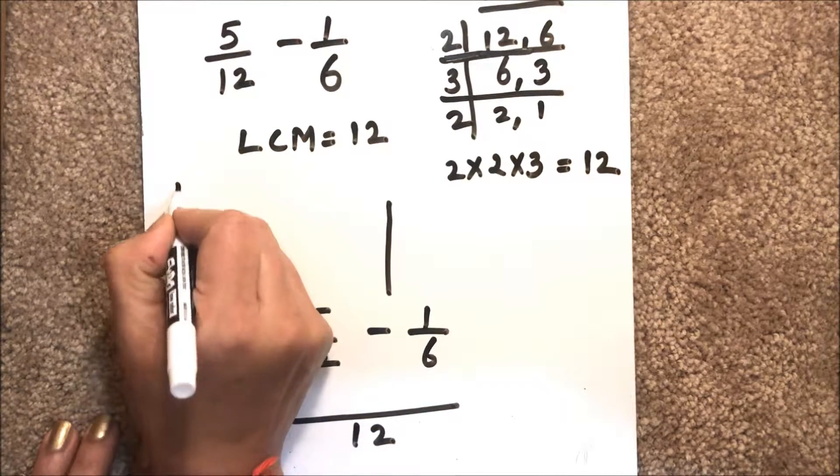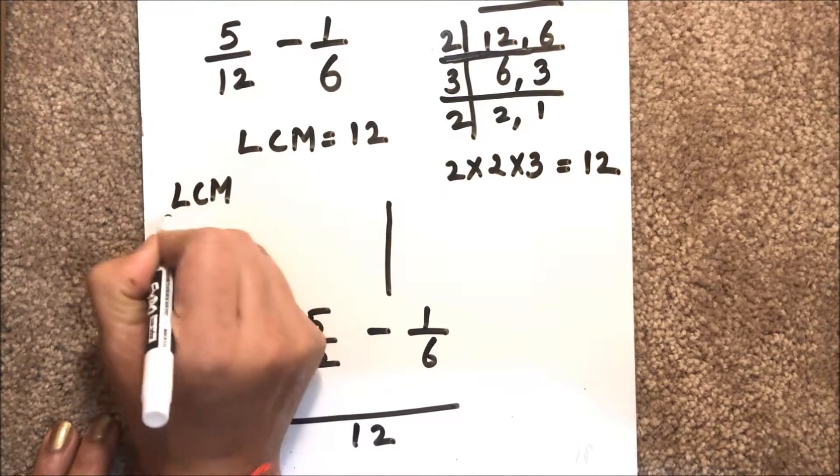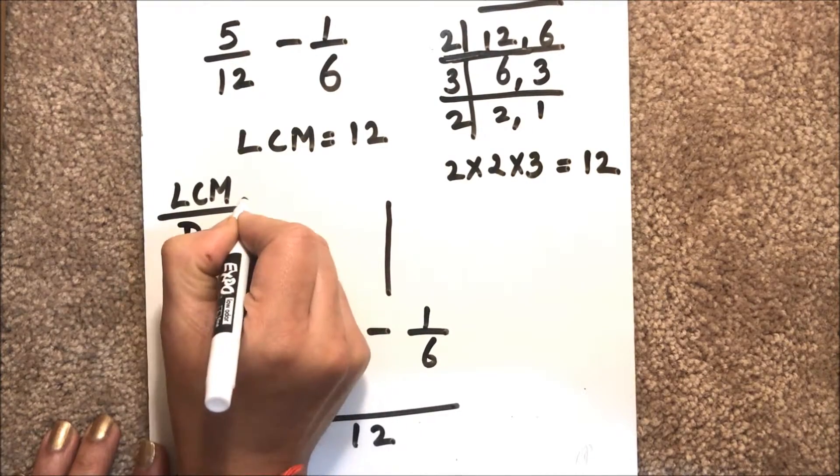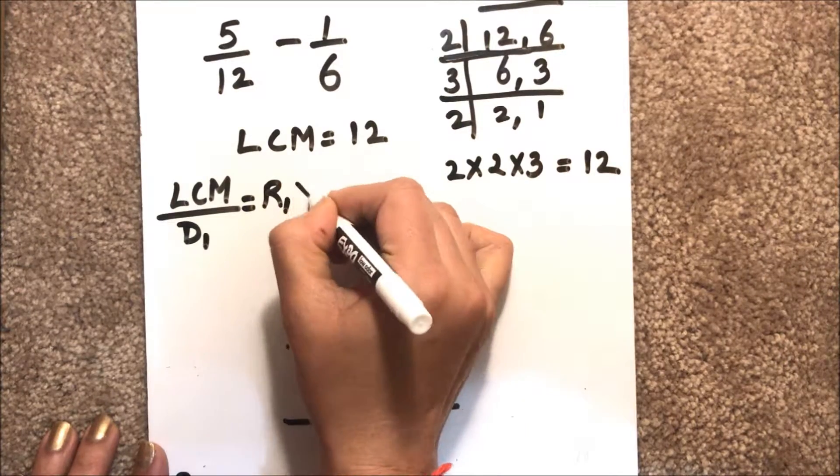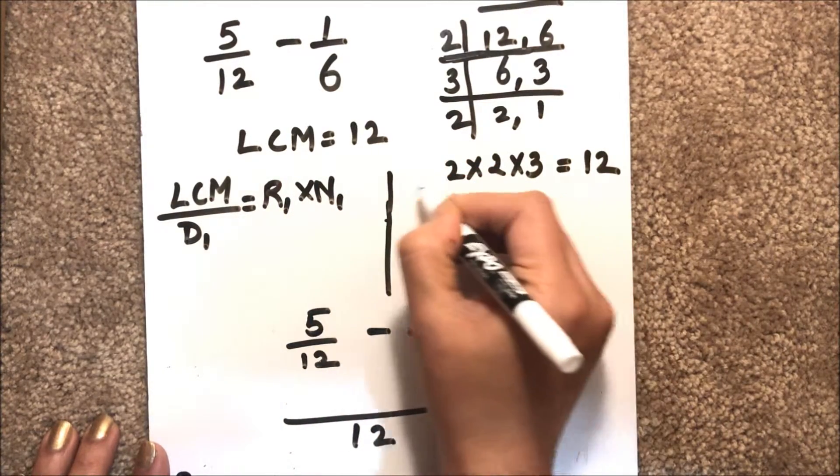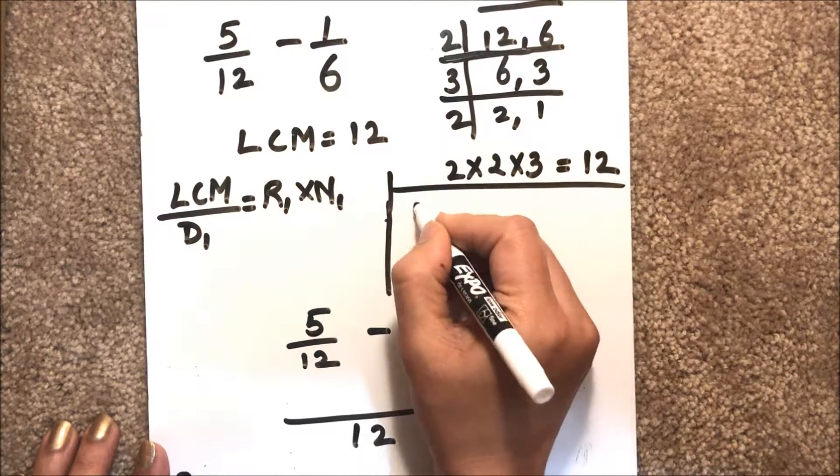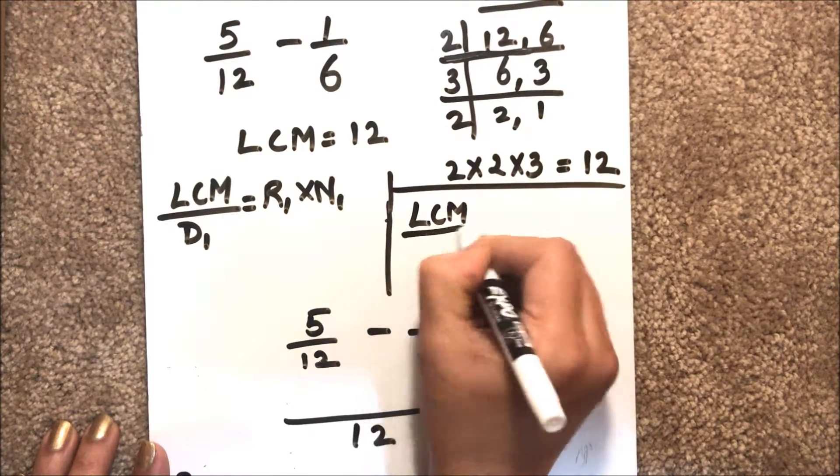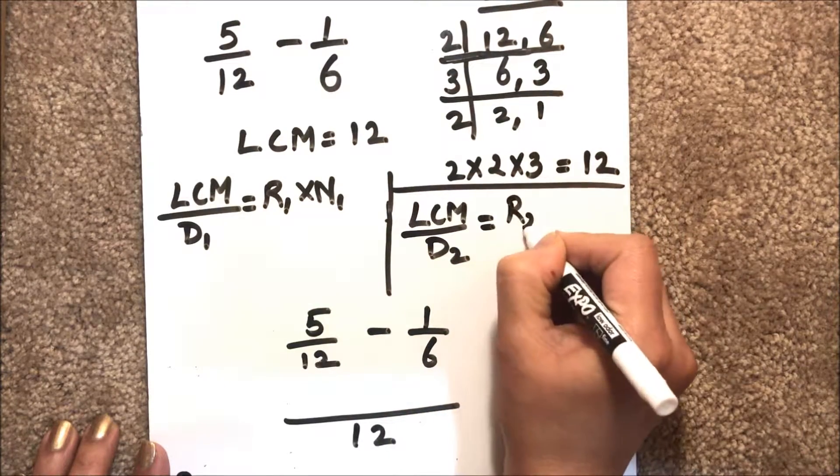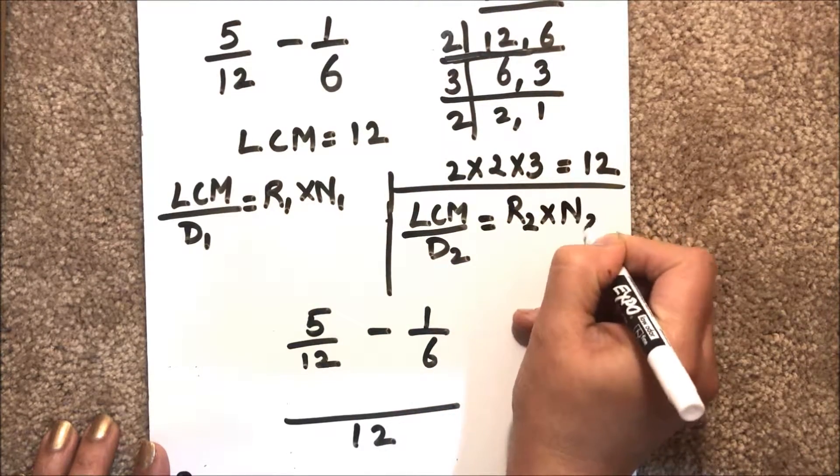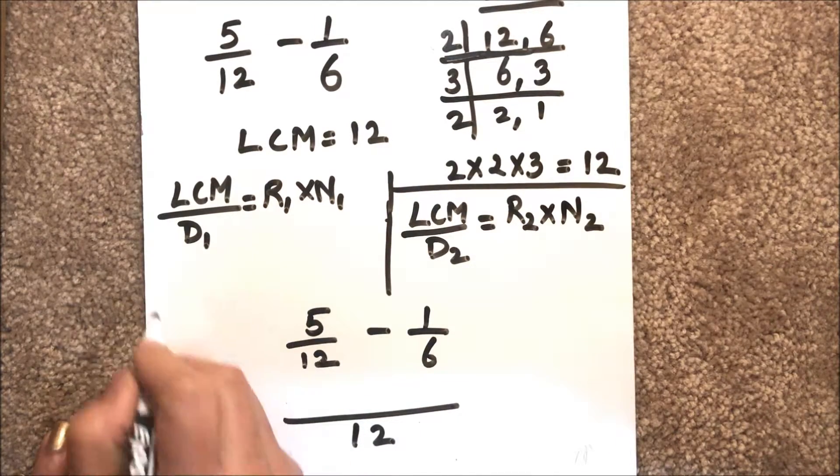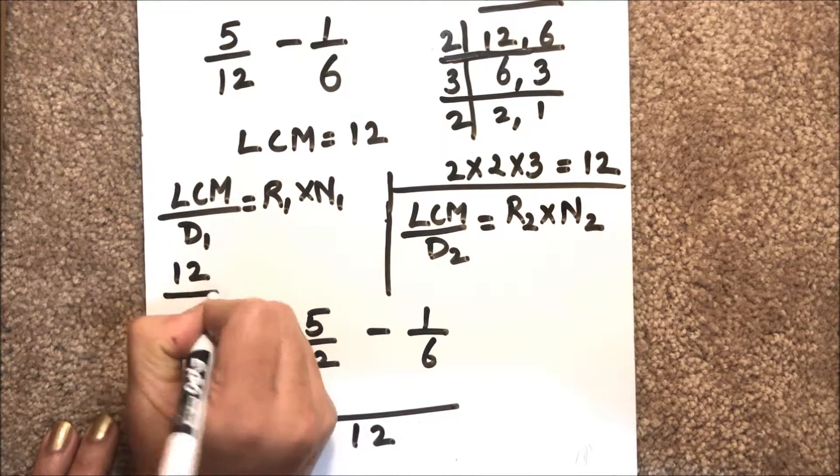Similarly, for the second one, we'll divide the LCM by the denominator of the second number, and the resultant we'll multiply by the numerator of the second number. So we'll see with the example here: LCM is 12, denominator 1 is 12.